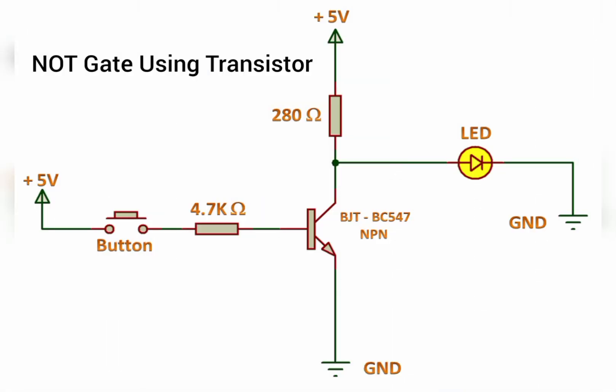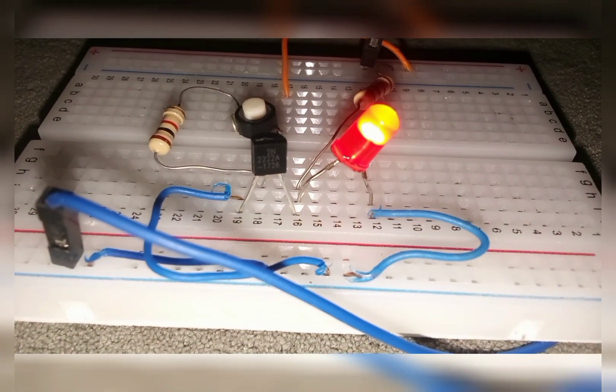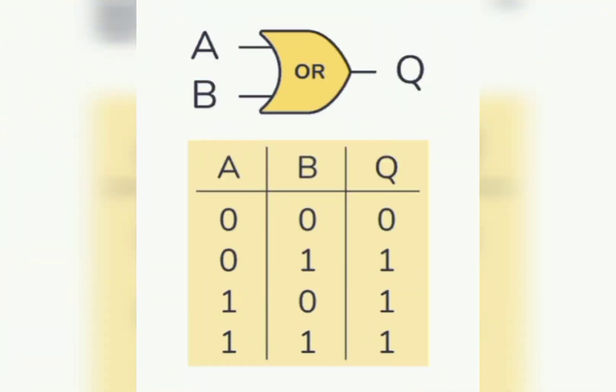This is a NOT gate demonstrated using a transistor. The NOT gate using a transistor works similarly to a NOT gate using a switch. We need one input device and one output device — a button and an LED. Initially, when the button is not pressed (open-circuited), the transistor does not allow signal through the emitter, so current flows through the collector and through the LED — meaning the LED glows. When we press the button, it activates the base and maximum current passes through the emitter; in this case, the LED does not glow. This is the live demo of using a transistor to demonstrate the NOT logic gate.